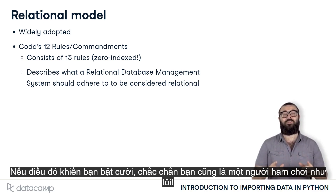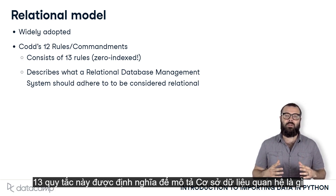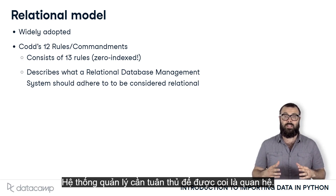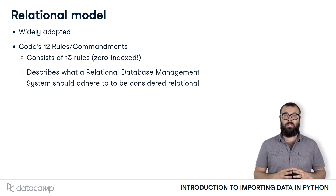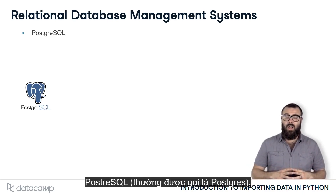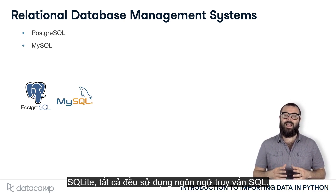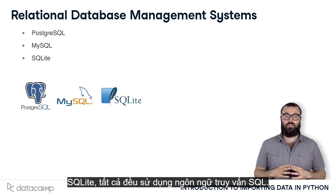If this makes you laugh, you're definitely a geek like me. These 13 rules were defined to describe what a relational database management system should adhere to in order to be considered relational. Among the most popular of such systems currently are PostgreSQL, commonly called Postgres, MySQL, and SQLite.